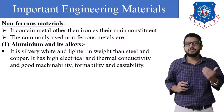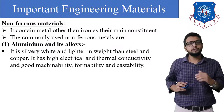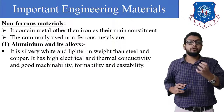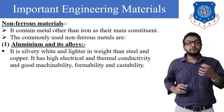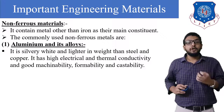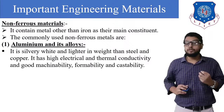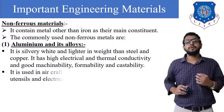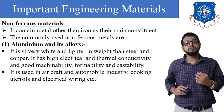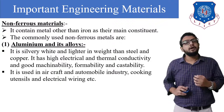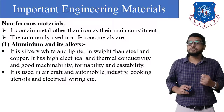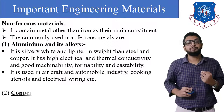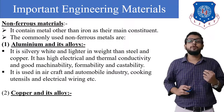Aluminium is comparatively lighter and is mainly used in aeroplane parts because we require lightness. It has high electrical and thermal conductivity and good machinability, formability, and castability. It is used in the aircraft and automobile industry, as well as for cooking utensils and electrical wires.